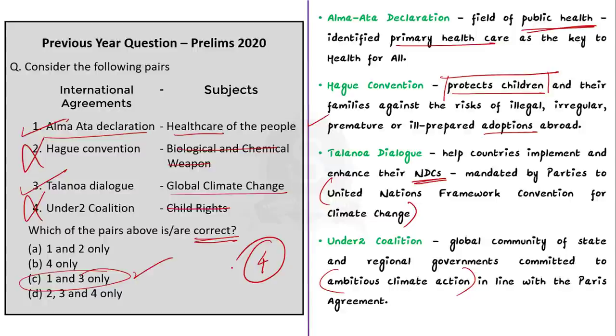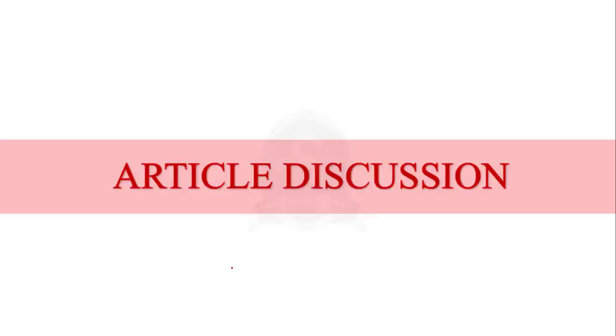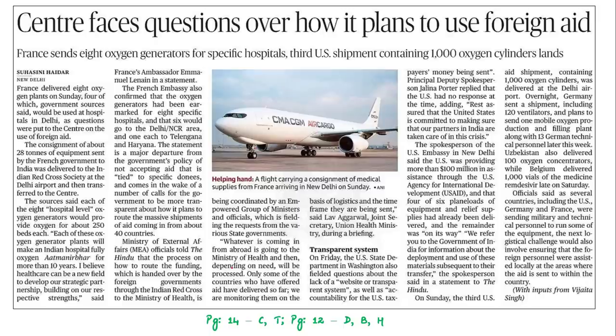With this, let us start our news article discussion session. This discussion is based on a news article which talks about the aids received by India from other countries. India is struggling with the second wave of the pandemic, and many countries are extending aid to India. For example, France sent eight oxygen generators, Germany sent ventilators, Russia also sent oxygen generators and ventilators, etc.